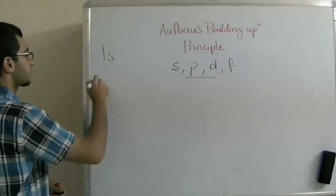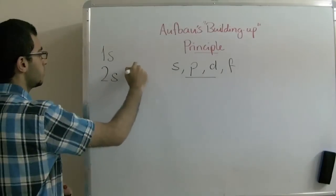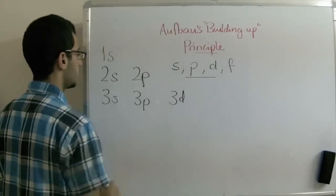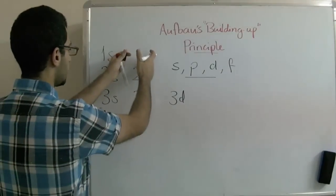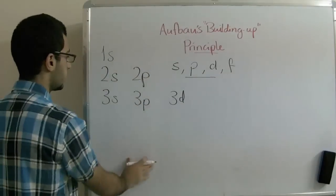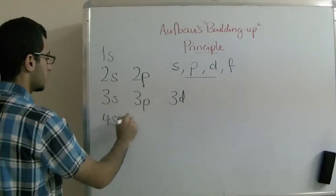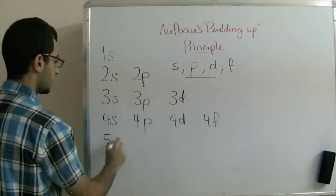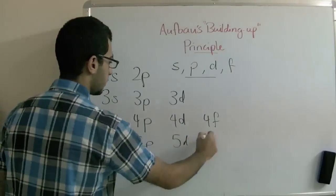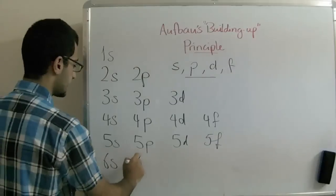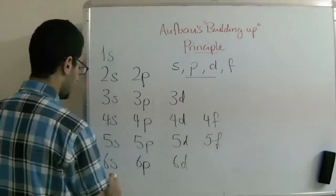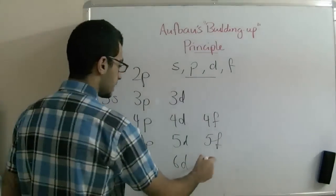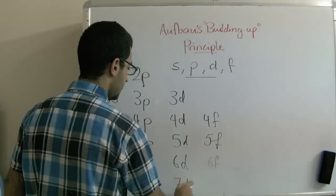We begin with the 1s, then the 2s, the 2p, 3s, 3p, 3d, and beware that we type the sublevels of the same letter under each other. The 4s, 4p, 4d, 4f, 5s, 5p, 5d, 5f, 6s, 6p, 6d, and 7s, 7p. We don't have a 6f, we don't have a 7d, or a 7f.